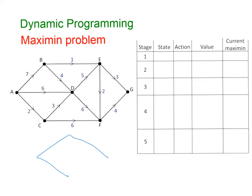I'm going to draw a very simple network. It's going to be a directed network, and we're going to have vertices A, B, C, and D, with some weights along the edges. We'll have 6 here, 3 here, 5 here, and 4 here.